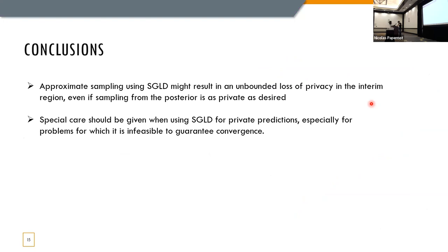So, to conclude, we show that approximate sampling using SGLD might result in an unbounded loss of privacy in the interim region, even if sampling from the posterior is as private as desired. And what this means is that we should give special care when using SGLD for private predictions, especially for problems in which we can't guarantee convergence. And that's it. Thank you very much.